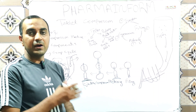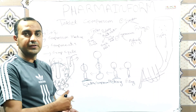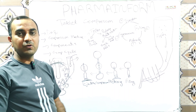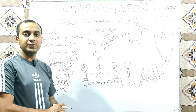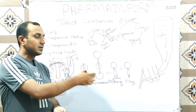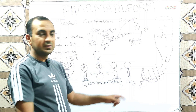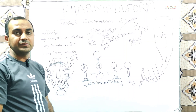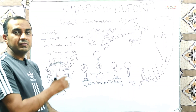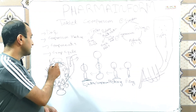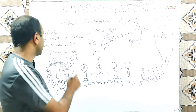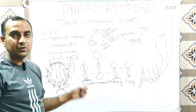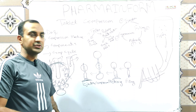A compression machine has a hopper, a feed frame, upper punch, lower punch, die, a turret, and a cam punch track system or guiding cams. These cams are what our punch travels along during the compression cycle into different positions. Other components include a weight adjustment cam, ejection cam, main compression rollers, and pre-compression rollers. These are the basic and main important components of the compression machine.